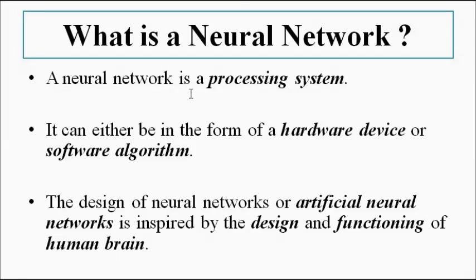The main task of the neural network is to process data or information. This neural network can either be in the form of a hardware device, a software algorithm, or a combination of both. This concept — this whole subject — is inspired by the design and functioning of the human brain. That's why the name itself suggests 'neural network.' The 'neural' part comes from neurons, which are the basic structural and functional unit of the human brain.